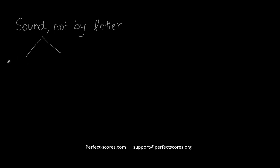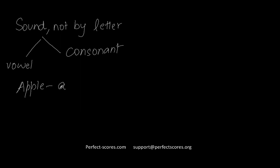Let's look at when to use which kind of article, beginning with 'a' and 'an'. The choice between 'a' and 'an' is determined by sound, not by the letter. Sounds are of two types: vowel sounds or consonant sounds. For example, the word 'apple' begins with the sound of 'a', which is a vowel, so you're going to put 'an' in front of it. 'Orange' begins with the sound of 'o' — again a vowel — so you put 'an' in front of it.